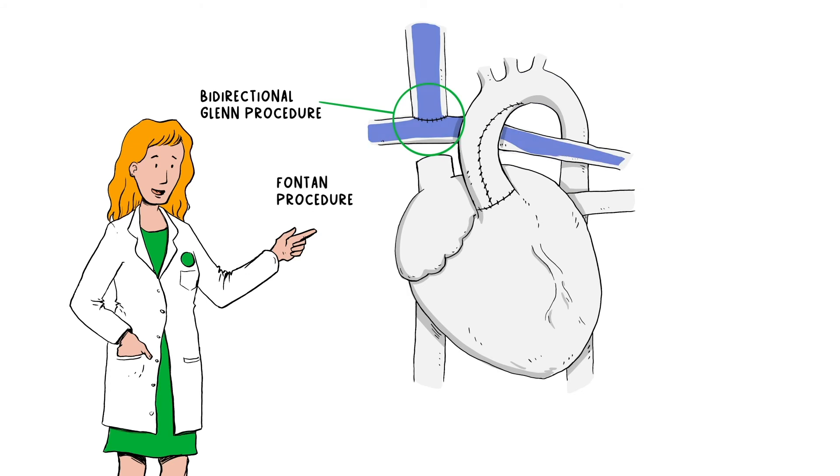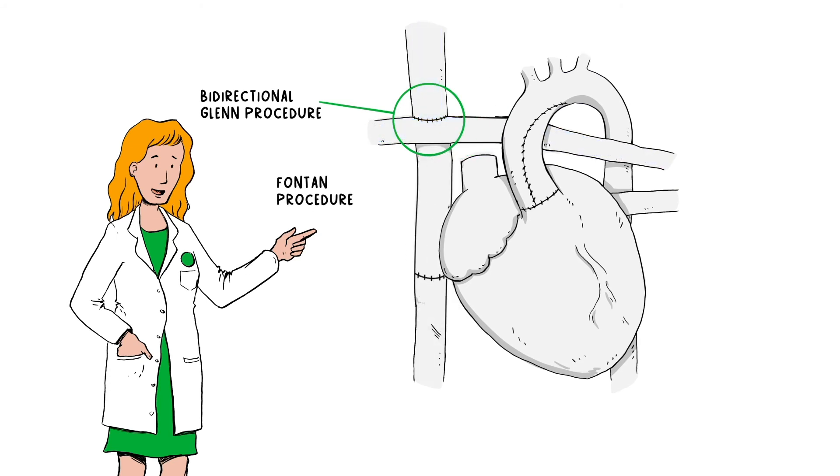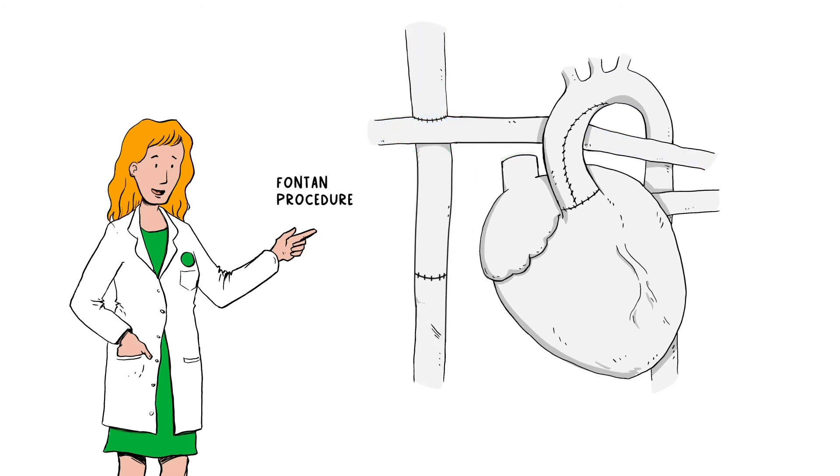The Fontan procedure, typically performed when a child is three to five years old, connects the large vein that returns blood from the lower part of the body to the lung arteries, allowing the rest of the blue blood returning from the body to reach the lungs.